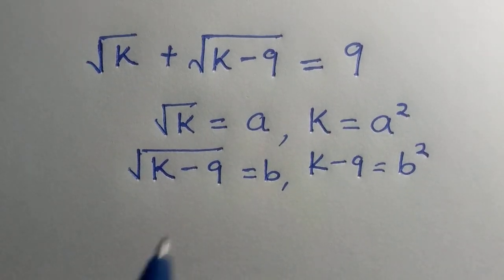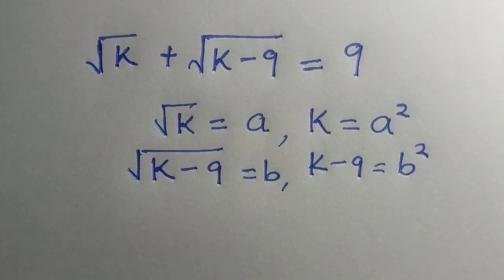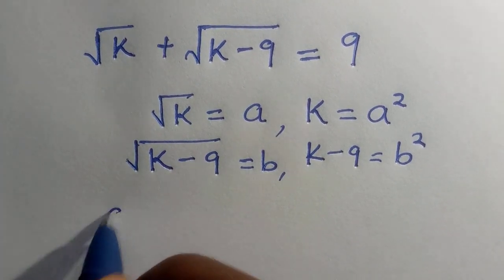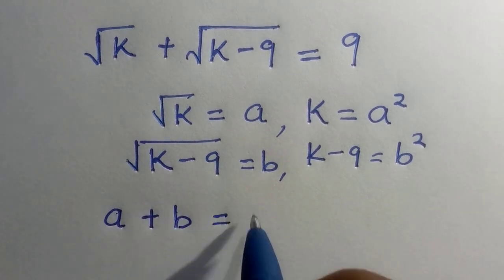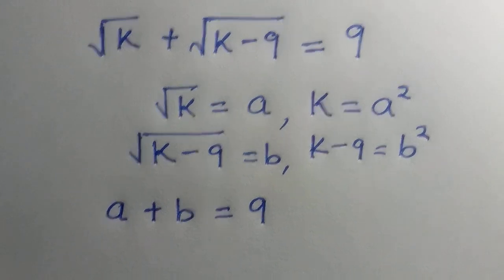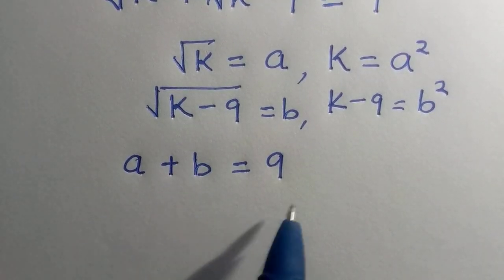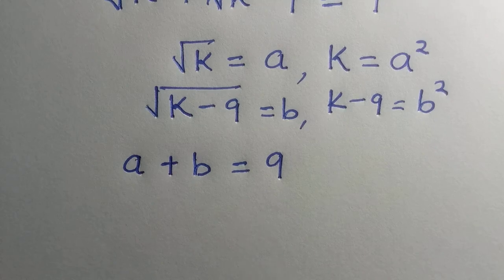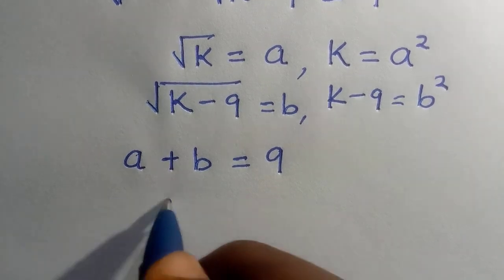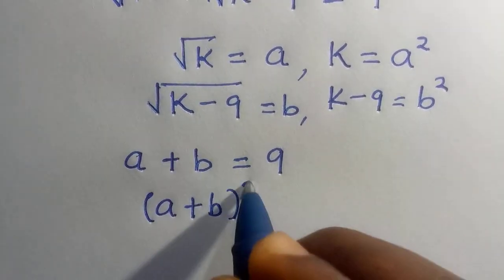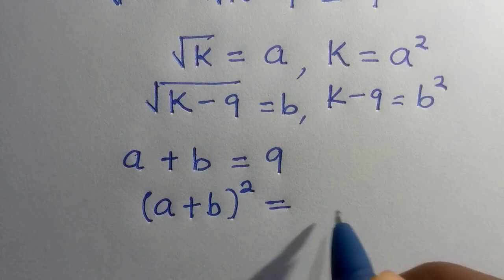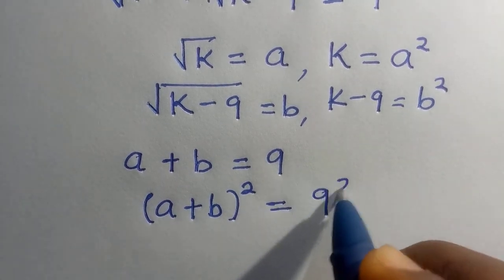So, we are going to do the replacement as we have a plus b equals 9. By taking the square of both sides, we have a plus b all square equals 9 square.